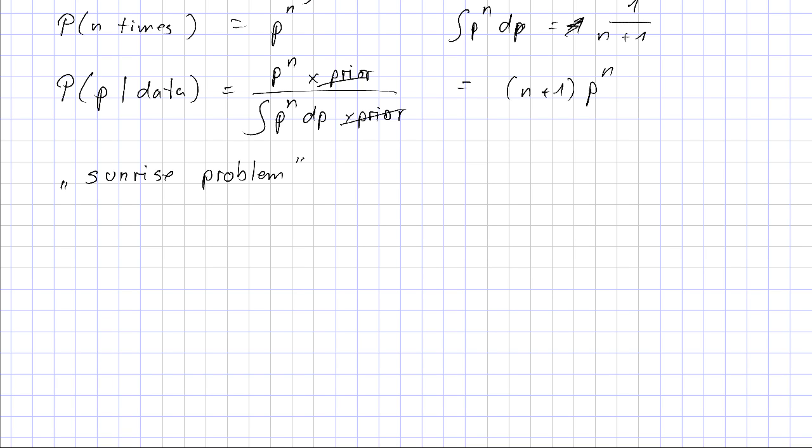The sunrise problem. So we saw it rising N times in a row. What's the probability that it will rise tomorrow? So what we're asking is basically the probability that we have N plus one sun rises, given the fact that we observed N sun rises. And that's the probability for N plus one divided by the probability for N. And this is how the probability for a number of sun rises is computed. So as a result, we get this.